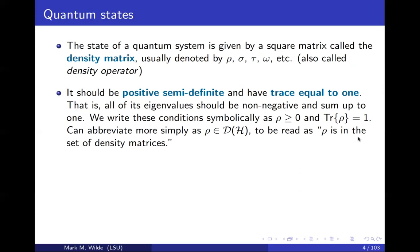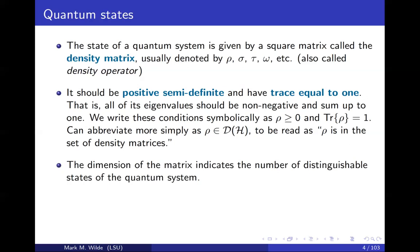And the matrix, furthermore, should be positive semi-definite. So the eigenvalues should be non-negative. And the trace of a matrix, you compute by summing the diagonal elements of the matrix. And it turns out that that's equivalent to summing up the eigenvalues. So those should sum up to one. And then we write these conditions symbolically as ρ is greater than or equal to zero, meaning ρ is a positive semi-definite matrix and the trace is equal to one. And so sometimes we'll use this notation, ρ is an element of the d density operators. So we just read that as ρ is in the set of density matrices.